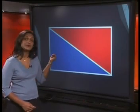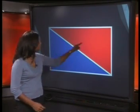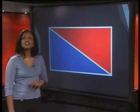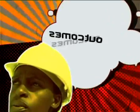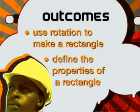Look at this rectangle here. We can see that it's made of two congruent triangles. Today, we're going to find another way of making this shape, still using triangles. By the end of this lesson, we should be able to use rotation to make a rectangle, and define the properties of a rectangle.